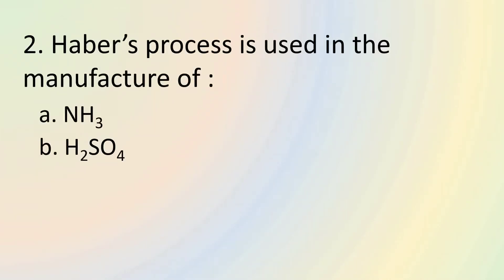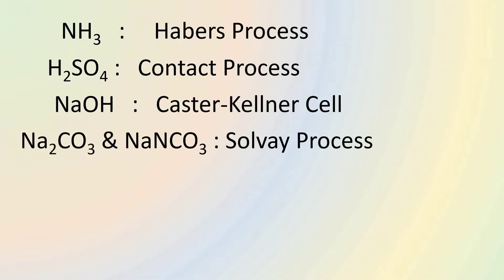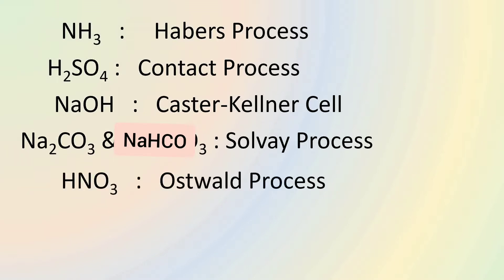Question number 2 asks us about Haber's process. Haber's process is used in the manufacture of ammonia, NH3. Similarly, contact process is used in the manufacture of sulfuric acid. Castor-Kellner cell is used in the manufacture of sodium hydroxide. Solvay process is used in the manufacture of sodium carbonate and sodium bicarbonate. Ostwald process is used in the manufacture of nitric acid, and Down's process is used in the manufacture of sodium.